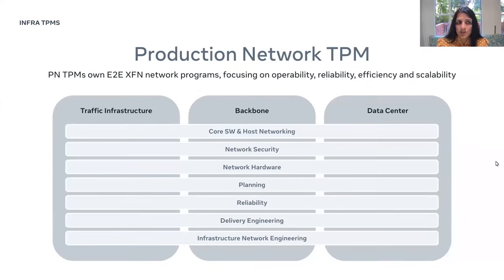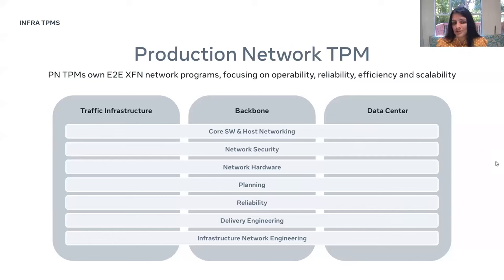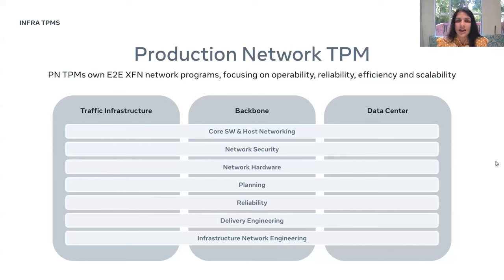Production Network TPMs own end-to-end cross-functional network programs for operability, reliability, efficiency, and scalability. Facebook maintains its own data centers, so there is host networking, networking security, hardware planning, delivery engineering, and infra network engineering. Traffic infrastructure needs to be constantly monitored. Production Network TPMs ensure that the backbone network on which Facebook products run is maintained and running seamlessly.